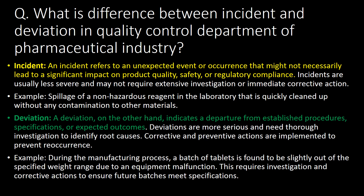A deviation, on the other hand, indicates a departure from established procedures, specifications, or expected outcomes. Deviations are more serious and require thorough investigation to identify root causes. Corrective and preventive actions are implemented to prevent recurrence. An example of a deviation is during the manufacturing process a batch of tablets is found to be slightly out of the specified weight range due to an equipment malfunction, requiring investigation and corrective actions to ensure future batches meet specification requirements.